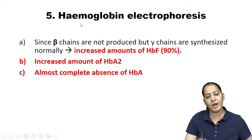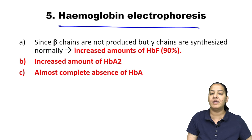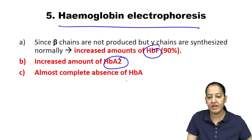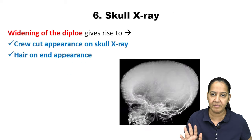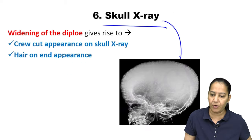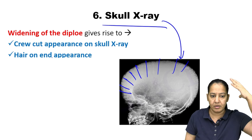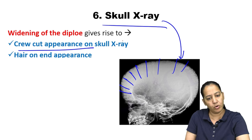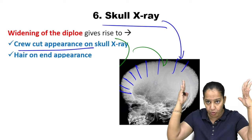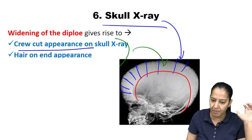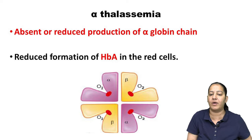On hemoglobin electrophoresis in beta thalassemia major, the maximum hemoglobins are HbA2 and HbF; HbA is either completely absent or very minimal. On skull X-ray, you see the classic 'crew-cut appearance' or 'hair-on-end appearance' due to expansion of the marrow cavity in the skull bones.